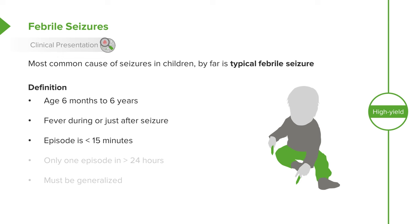The episode should last less than 15 minutes, and there should be only one episode in the 24-hour period. It should also be a generalized seizure — a focal seizure is not a febrile seizure.